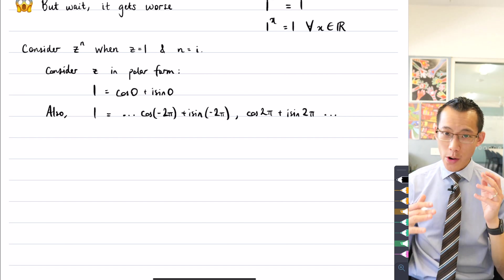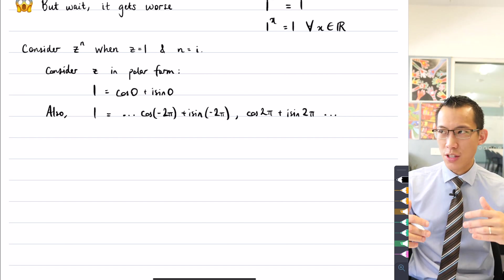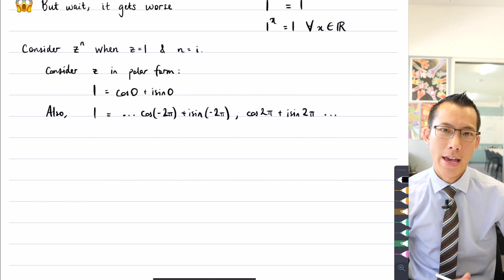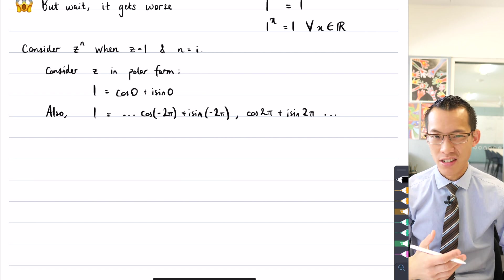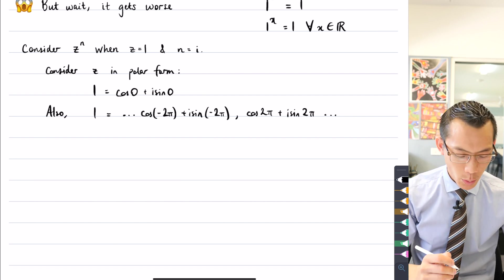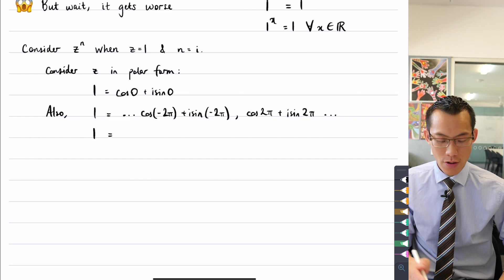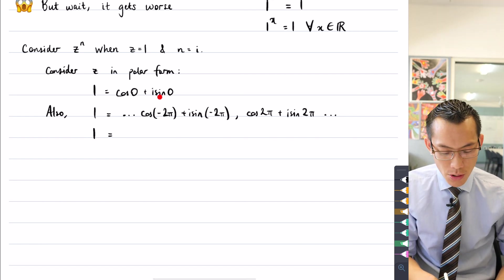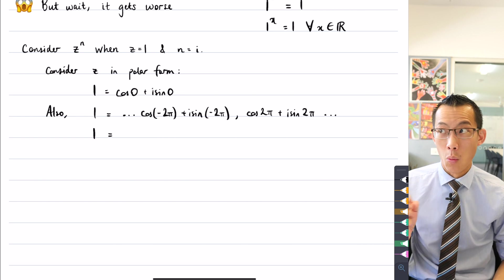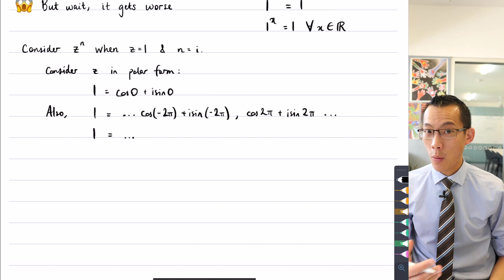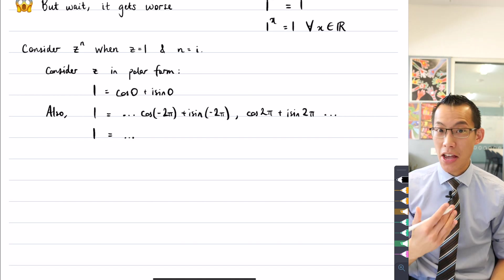Now in order to work out, well what does this mean in terms of exponentiation, raising to the power of i, I've got to get back into exponential form to deal with that, at least to know how I should evaluate it. So what I'm going to do is I'm going to say one equals, and now like I have on the page right now, I've got three different ways to write one in polar form, so that gives me three different ways to write one in exponential form.